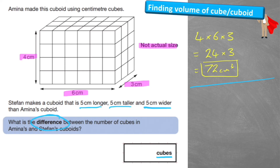Now we need to find Stefan's. Stefan's is 5 centimetres bigger in all dimensions, so the length becomes 11, the width becomes 8, and the height becomes 9. So 11 times 8 is 88. Times 10 gives us 880, then take away one lot of 88, which gives us 792. So our volume equals 792 centimetres cubed.